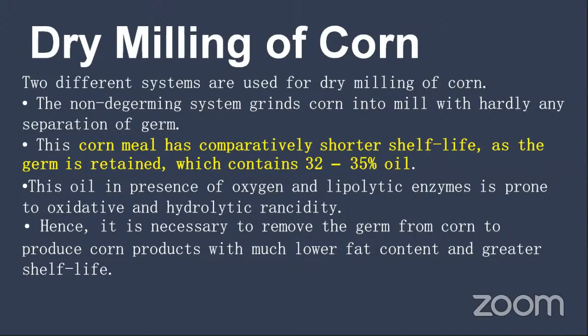Milling means bringing the grain into edible form — removing the outer hull, removing the germ, and then taking the remaining portion in the form of grits, hominy feed, or coarse grits, so that it is edible in nature. In dry milling, the main purpose is to remove the germ. The reason we remove the germ is because it contains a high oil content, and that leads to rancidity.